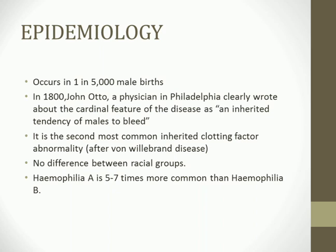There is no difference in racial groups — all races have an equal probability of getting the disease. Hemophilia A is five to seven times more common than Hemophilia B.